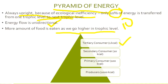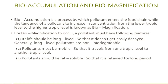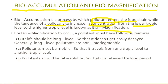There is one more important topic: bioaccumulation and biomagnification. Bioaccumulation is a process by which a pollutant enters the food chain, while biomagnification is the tendency of a pollutant to increase in concentration from one trophic level to the higher trophic level. For biomagnification to occur, the pollutant must be long-lived and generally non-biodegradable, must be mobile so it can travel from one trophic level to another, and must be fat-soluble so it is retained for a long period.